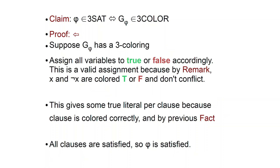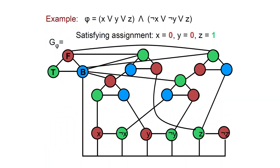Here is the concrete example from before: the satisfying assignment is X = false, Y = false, Z = 1. Here are the colors for the nodes. This assignment satisfies the formula and here is a 3-coloring of the graph. The first clause gadget corresponds to the first clause being true, and the second to the second clause being true. The coloring of the first gadget is possible because it is connected to at least one true literal, which is Z. The second clause gadget is colorable because it is connected to the true literal node X.